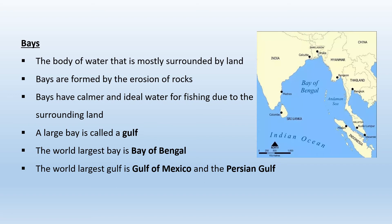A gulf has a narrower opening than a bay, and a bay has a wider opening. For example, the Bay of Bengal connects with the Indian Ocean. You can see from the diagram that a bay has a wider opening compared to a gulf.